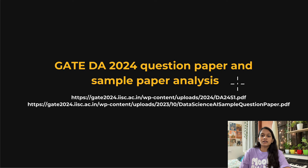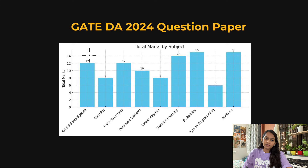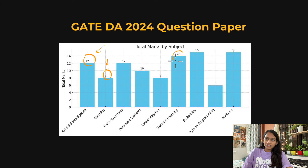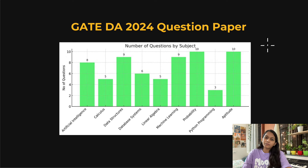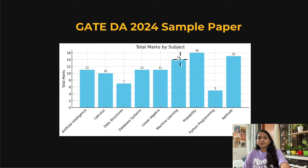Let's see the subject-wise important topics for GATE DA. But before that, let's look at the analysis of the GATE DA 2024 question paper and the sample paper released last year. In the 2024 paper, the total marks per subject were: AI had 12 marks, calculus had 8 marks, data structures had 12 marks. Machine learning and probability had the most weightage — machine learning had 14 marks and probability had 15 marks. In terms of number of questions, AI had 8 questions, calculus had 5 questions, machine learning had 9 questions, and probability had 10 questions.